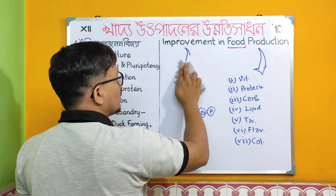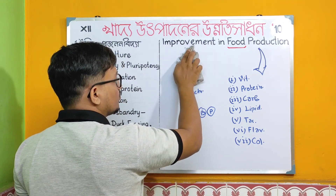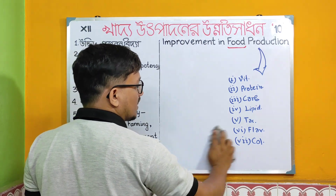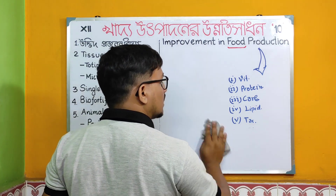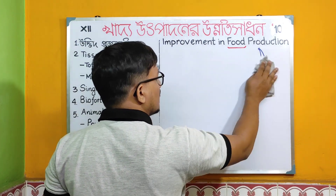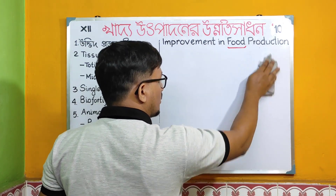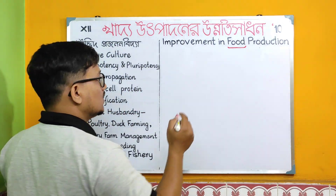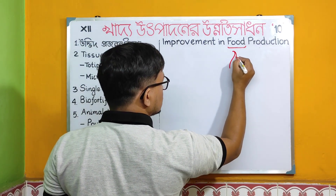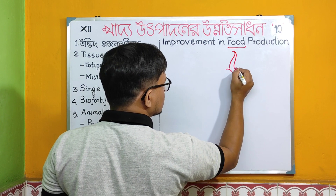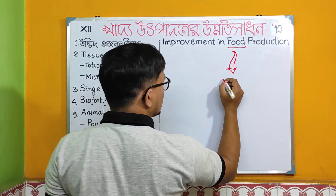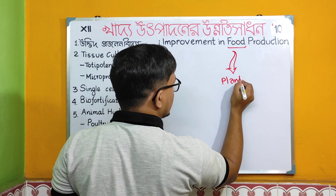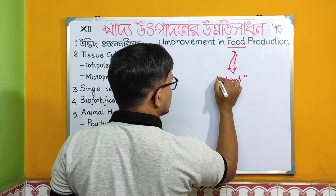The chapter covers different sections: plant system, single cell protein which is bacterial system, and animal system. The chapter is divided into three main sections — food production from plant system, bacterial/microorganism system, and animal system.